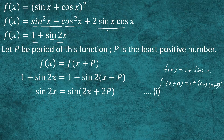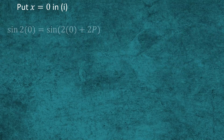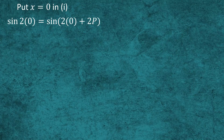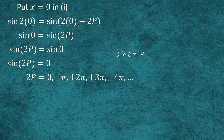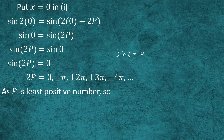We use x = 0 to simplify this expression and find the period. Substituting x = 0, we get sin(0) = sin(2p), which rearranges to sin(2p) = sin(0). Since sin(0) = 0, the expression becomes sin(2p) = 0. We find all possible values of 2p: 0, ±π, ±2π, ±3π, ±4π, and so on. Since p is the least positive number, we neglect 0 and negative values.